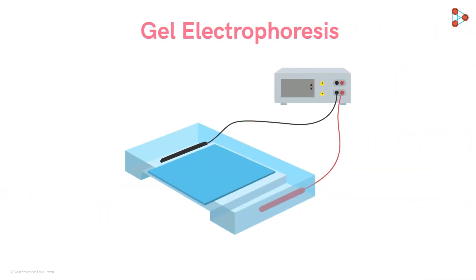Here's an illustration of the casting tray, containing the gel in which we will load the DNA mixture. We usually opt for a comb to form well-like structures into the gel. And why do we do that? Because it's in these wells in the agarose gel that we load the DNA mixture.